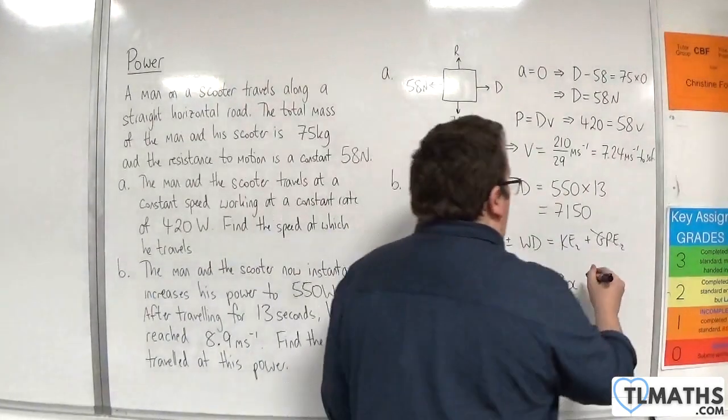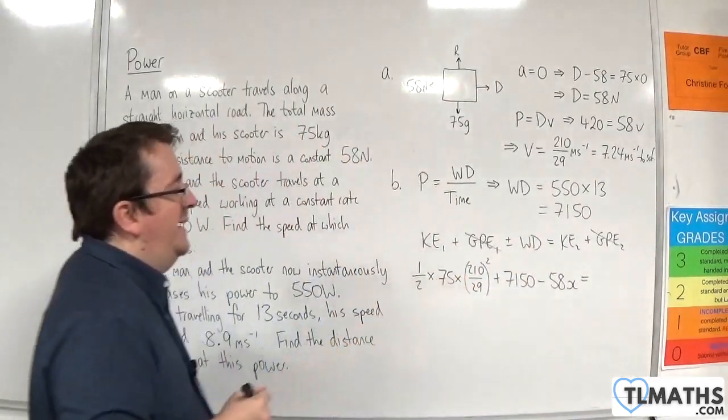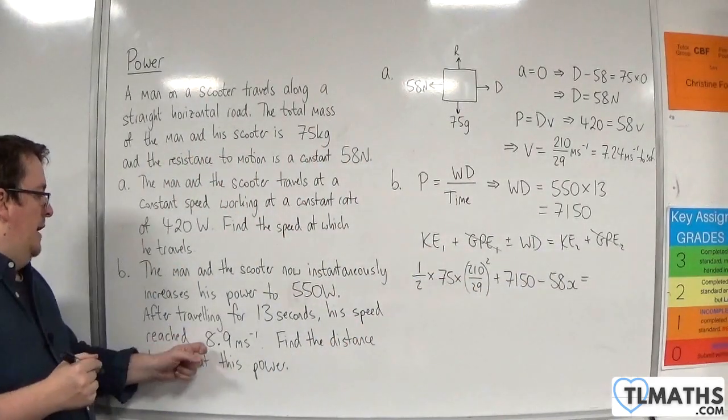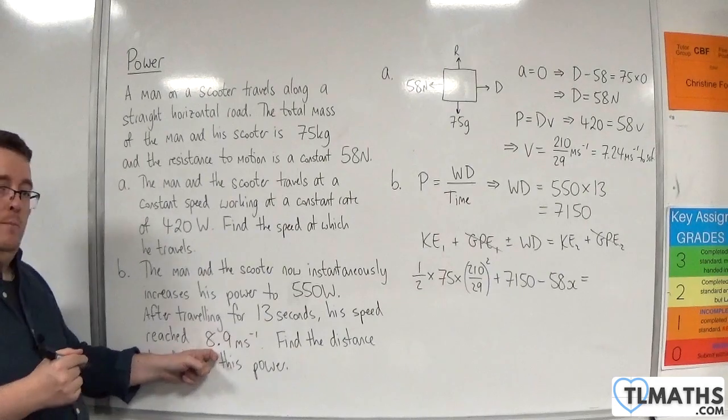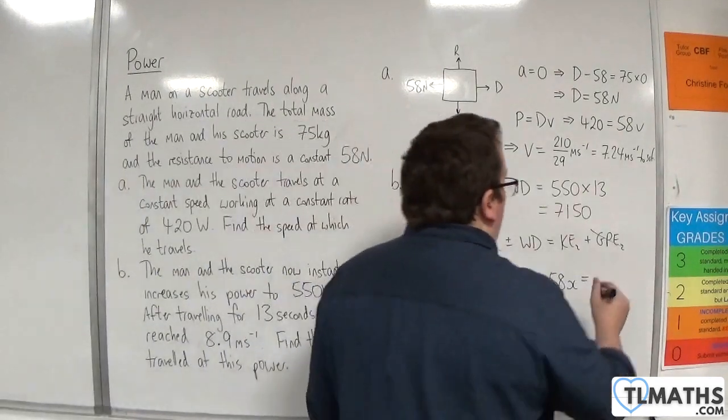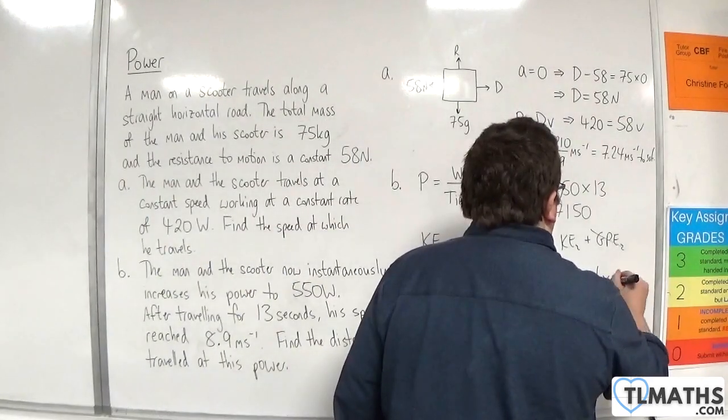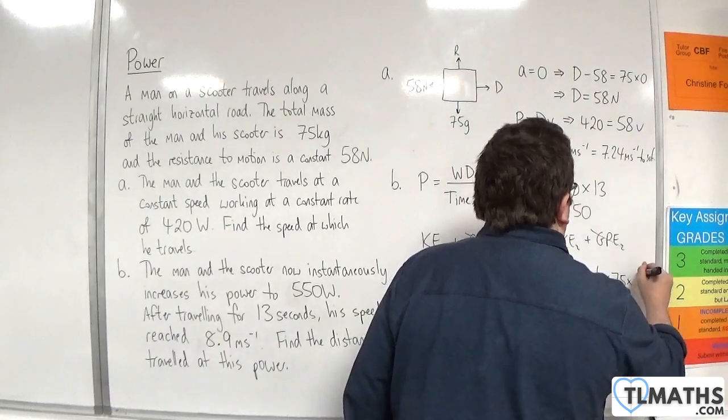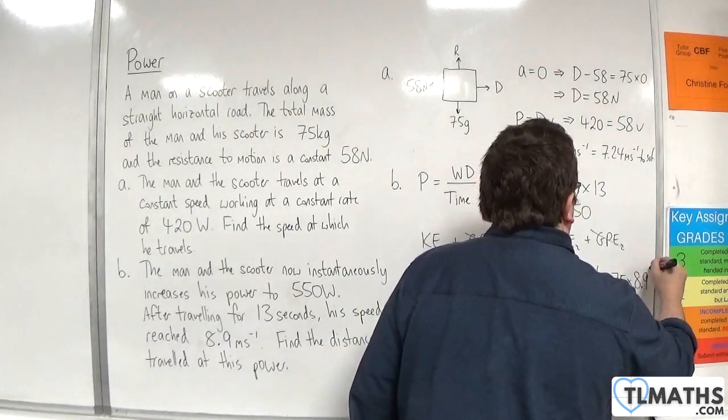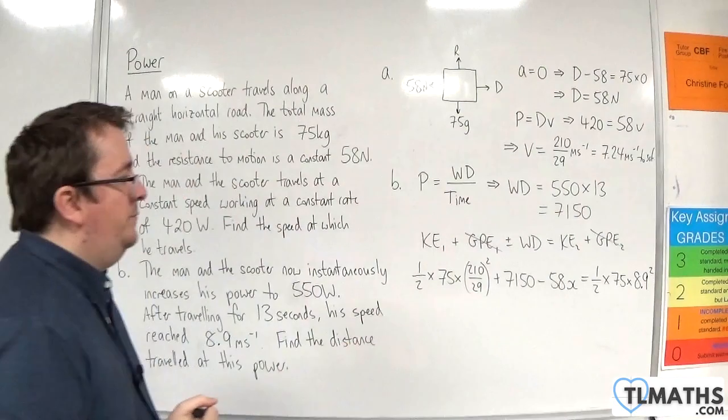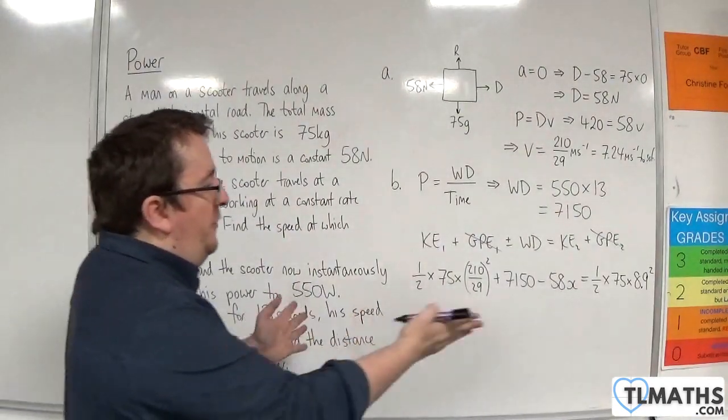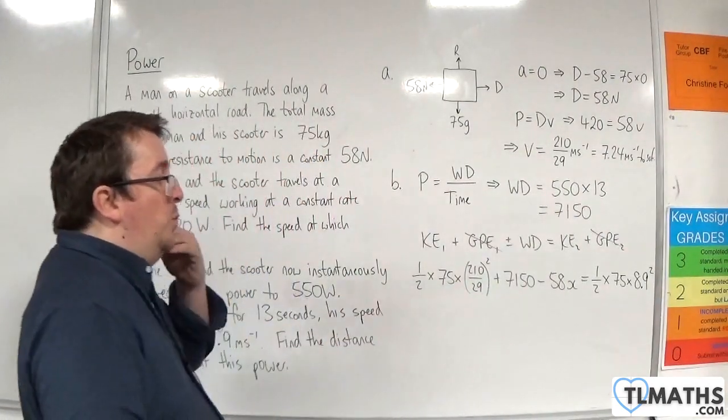And that's going to be equal to the final kinetic energy. He reaches a speed of 8.9 metres per second. So that's 1 half times the mass, 75, times by 8.9 squared. This is an equation now that I can use to work out x.